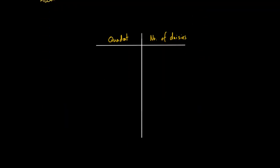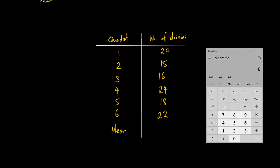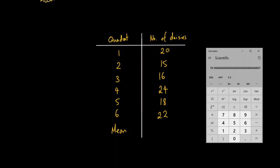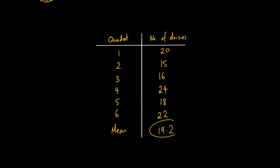Let's get some numbers. You'd want a results table with quadrat number and number of daisies. After your survey you'd end up with results like these. Then you calculate the mean: (20 + 15 + 16 + 24 + 18 + 22) divided by 6. I put it all in brackets because you need to sum all values before dividing by 6. That gives 19.2 as the mean — so one quadrat area equals 19.2 daisies.